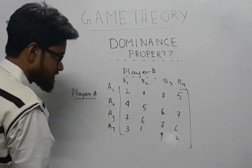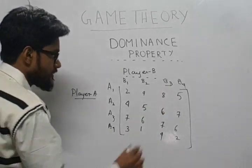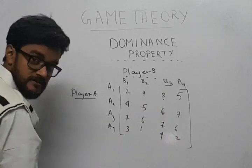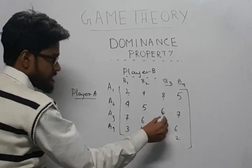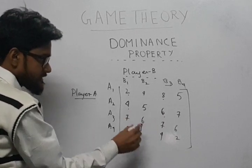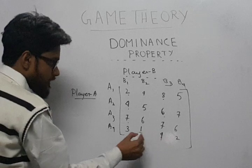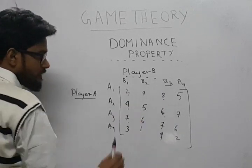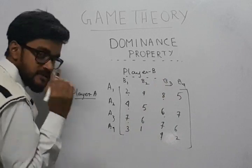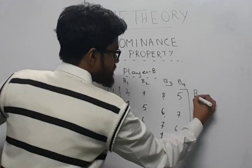Now as you can see column B3, in column B3 the first value is 8, here the first value is 2. This value is 6, here this value is 6. This value is 7, this is 7. So if you compare this column with this column, this is B3.